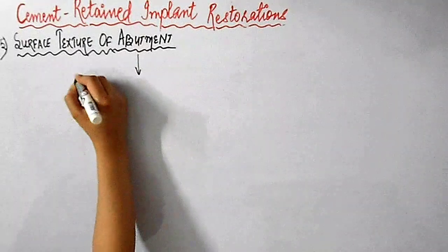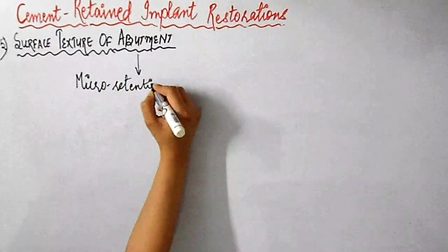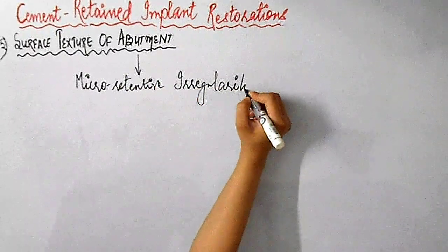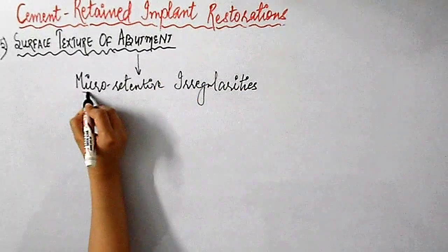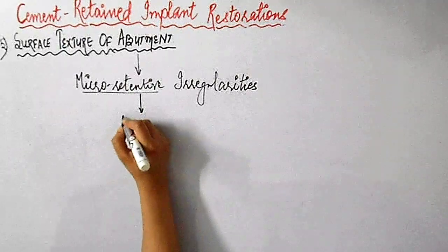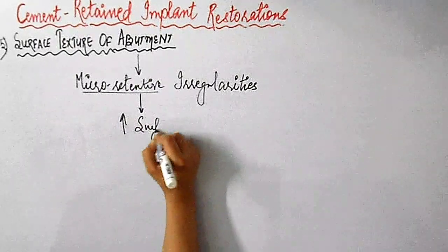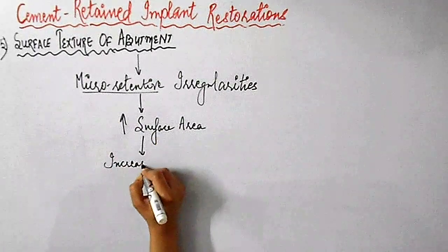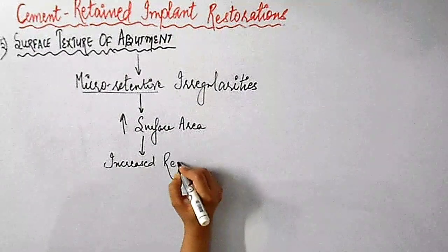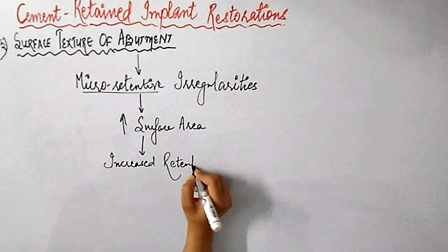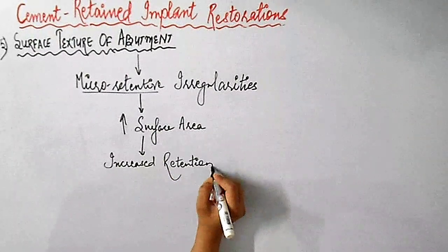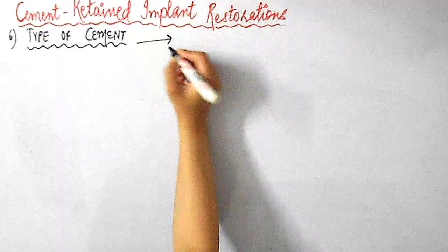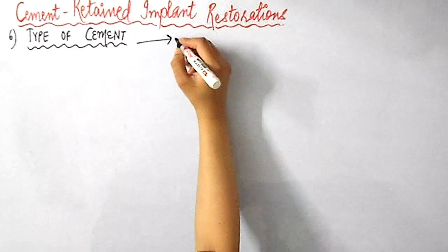Regarding the surface texture of the abutment, micro-retentive irregularities on the abutment surface result in increased surface area for bonding of luting agents, hence resulting in increased retention.